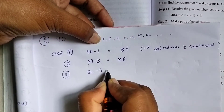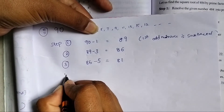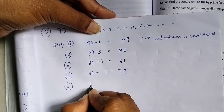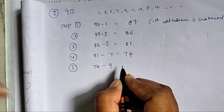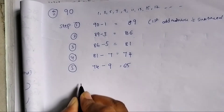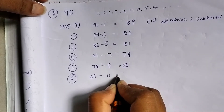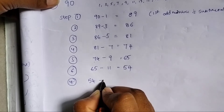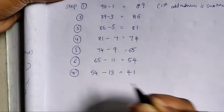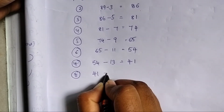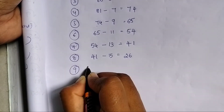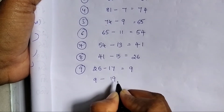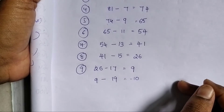Step 3: 86 minus 5 equals 81. Step 4: 81 minus 7 equals 74. Step 5: 74 minus 9 equals 65. Step 6: 65 minus 11 equals 54. Step 7: 54 minus 13 equals 41. Step 8: 41 minus 15 equals 26. Step 9: 26 minus 17 equals 9. Then 9 minus 19 gives a negative value, not 0. So 90 is also not a perfect square number.